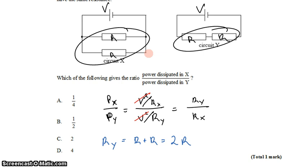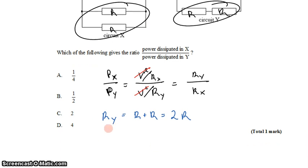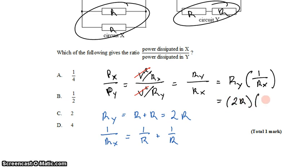For circuit X, these are parallel circuits. The formula for equivalent resistance in parallel circuits is that 1 over the equivalent resistance is the sum of 1 over the resistance of each resistor. So this gives me Ry and 1 over Rx, which is the same as Ry times 1 over Rx. That gives me 2R times 1 over R plus 1 over R.